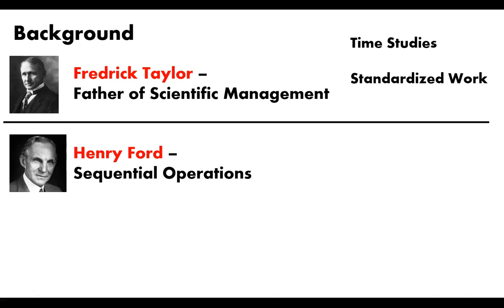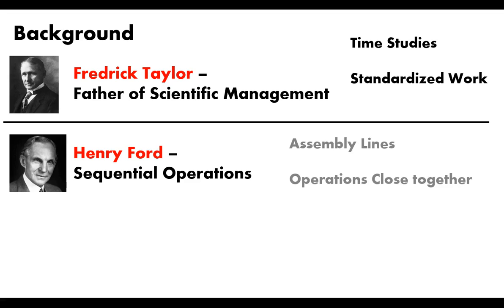The next one is Henry Ford. Most of you know Henry Ford in relation to the automobile and his innovation of the assembly line. But let's think of an assembly line differently — what is it actually doing? It is putting your process in order and making it a logical sequence. He is responsible for sequential operations, getting your process in a sequence to the point where you can have a conveyor belt, an assembly line in place, and have a complete car roll off the end. He came up with the assembly line and putting operations in close proximity to each other.